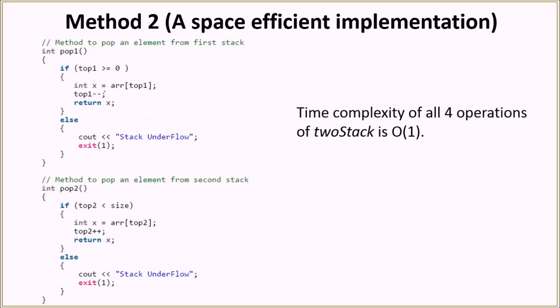Now let's look at pop1. In pop1, we will be checking if top1 is greater than or equal to 0. If that is the case, then it still has elements. Otherwise, there is stack underflow. If it has the element, we get the element inside a variable x. We do top1-- and then we return the variable x, that is the popped element.